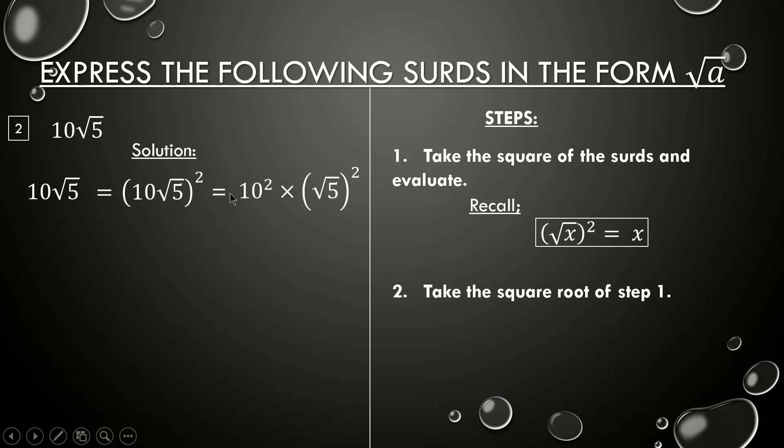All right, 10² is 100 and (√5)² is 5. 100 times 5 gives us 500.